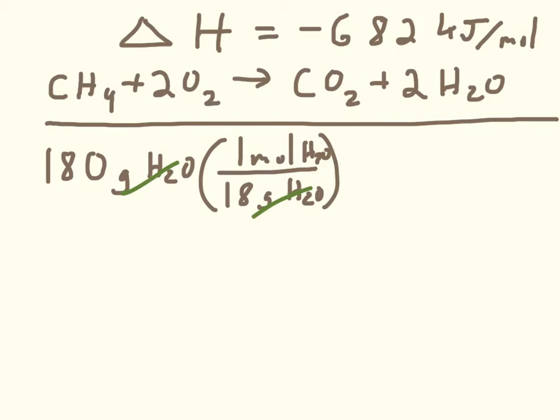And we know we wanted to go from that to heat. So we've got to write a conversion factor here. And we know we want to end up with kilojoules and that we've got negative 682 kilojoules per mole. But per mole of what? And this is the whole key to a stoichiometry heat problem right here.